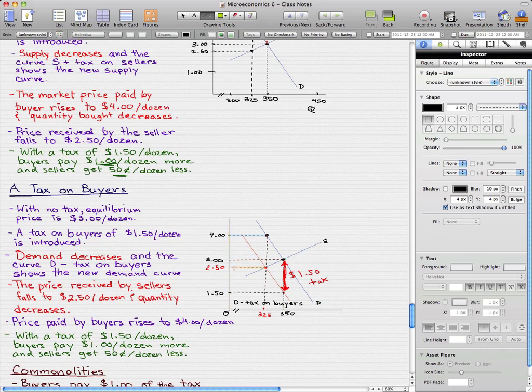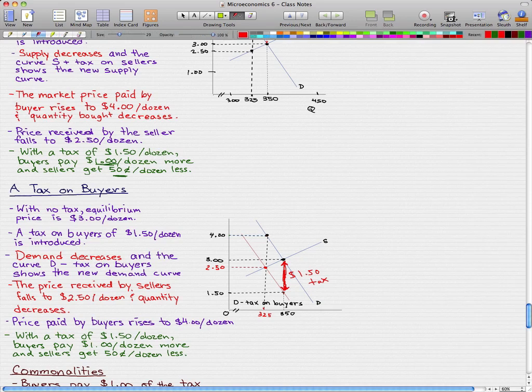The drop from $3 to $2.50 is a 50-cent loss. The sellers get $0.50 less for their dozens of eggs. The quantity fell from 3.50 to 3.25, and at this quantity, the buyers pay $4, whereas before they paid $3. So the buyers pay $1 per dozen more than they used to.